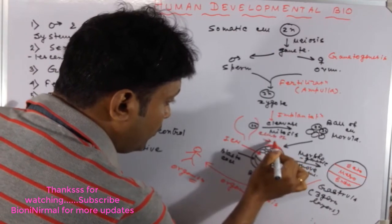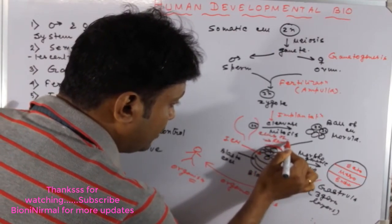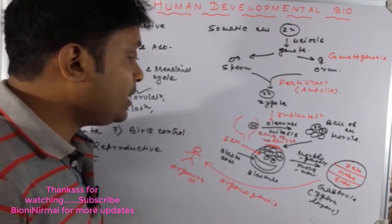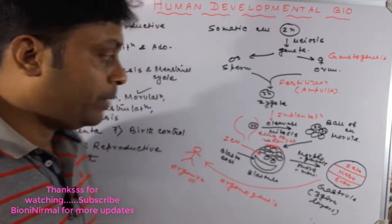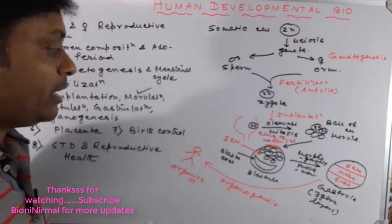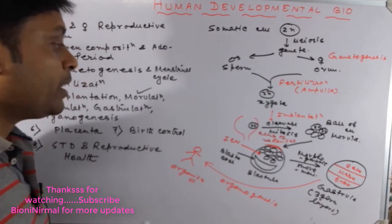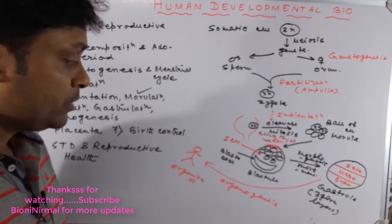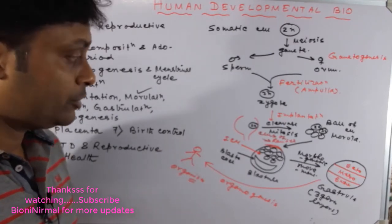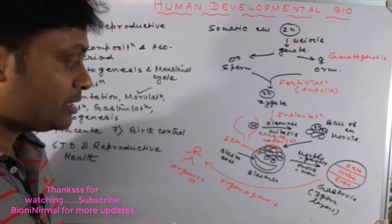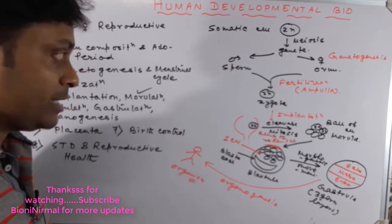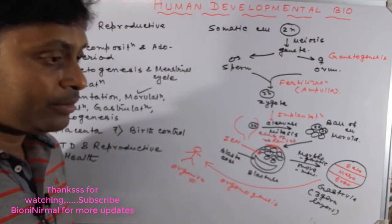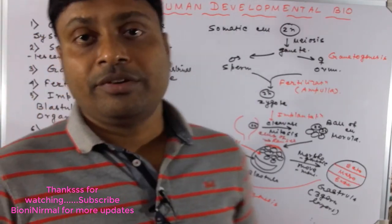The blastula is formed, and the inner cell mass undergoes morphogenetic movement forming the three germ layers: ectoderm, endoderm, and mesoderm. By the process of organogenesis, various kinds of organs are produced from these three germ layers and an organism is developed. This is the basic scenario of developmental biology, and you will read about these topics sequentially.